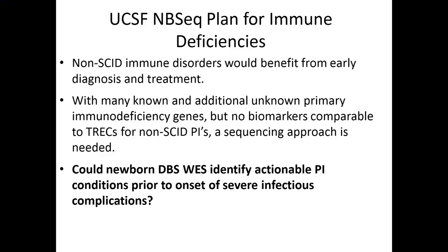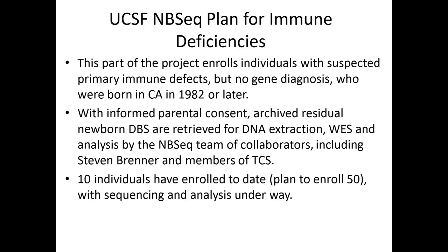To do this study, we are enrolling patients from our immune deficiency clinic after their diagnosis has been obtained. We have to take patients who were born in California so that their archived dried blood spots will be accessible. Then with informed consent, we fish out the leftover dried blood spots and do whole exome sequencing. So far, we've enrolled 10 individuals and plan to enroll 50. We expect a rate of finding a gene from the newborn dried blood spot of up to above 30 to even 40 percent. I'm now going to turn the presentation over to Barbara Koenig, who's going to talk about the ethical program in our UCSF NB-Seq project.